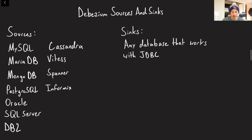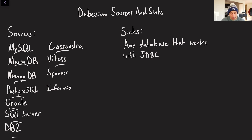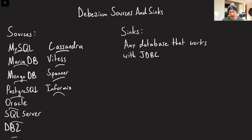What are some sources and syncs that Debezium actually supports? If you're using any of the popular databases on the source side — note that they're all transactional databases, for row-based writes and transactional applications — including Cassandra, Vitess, Spanner, and Informix. On the sync side, pretty much any database that works with JDBC. JDBC is an abstraction layer where from your program you can write to any database that has a JDBC implementation, which is the majority of them. So on the sync front, it's super flexible; on the source front, it's getting there and pretty flexible at this point too.